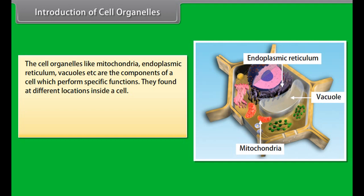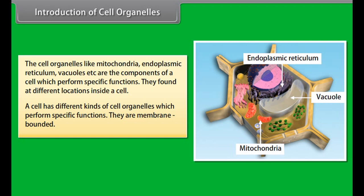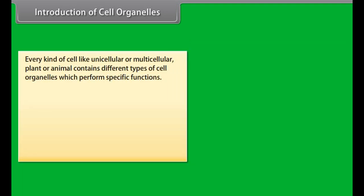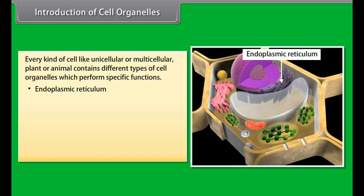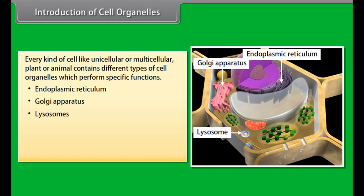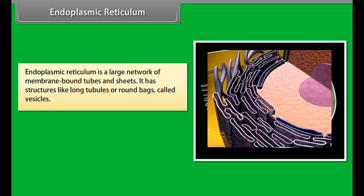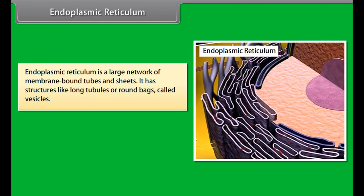The cell organelles like mitochondria, endoplasmic reticulum, vacuoles, etc. are the components of a cell which perform specific functions. They are found at different locations inside a cell. A cell has different kinds of cell organelles which perform specific functions; they are membrane bounded. Every kind of cell, like unicellular or multicellular, plants or animal, contains different types of cell organelles. Endoplasmic reticulum, Golgi apparatus, lysosomes, mitochondria, plastids and vacuoles are some examples.